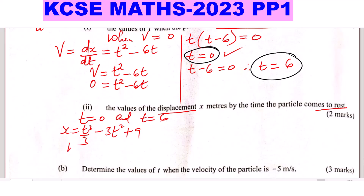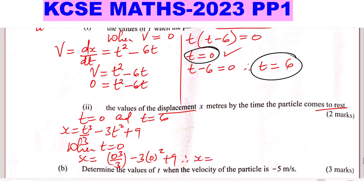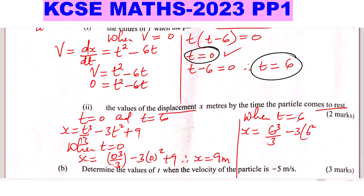When t equals 0, substitute into x: x equals 0 cubed over 3 minus 3 times 0 squared plus 9. So x equals 9 meters. When t equals 6, substitute: x equals 6 cubed divided by 3 minus 3 times 6 squared plus 9. Using the calculator, you get negative 27 meters.